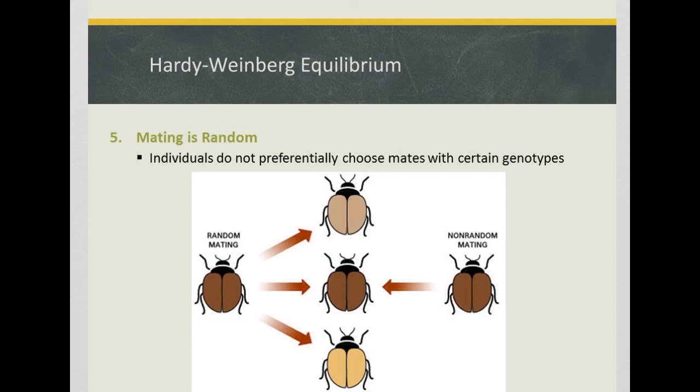Last but not least, the fifth condition is that mating must be random. Individuals do not preferentially choose mates with a certain genotype. For example, random mating means this brown beetle can mate with any given individual and is not specifically choosing mates based on traits. Non-random mating would be if this brown beetle only wanted to mate with other brown beetles.